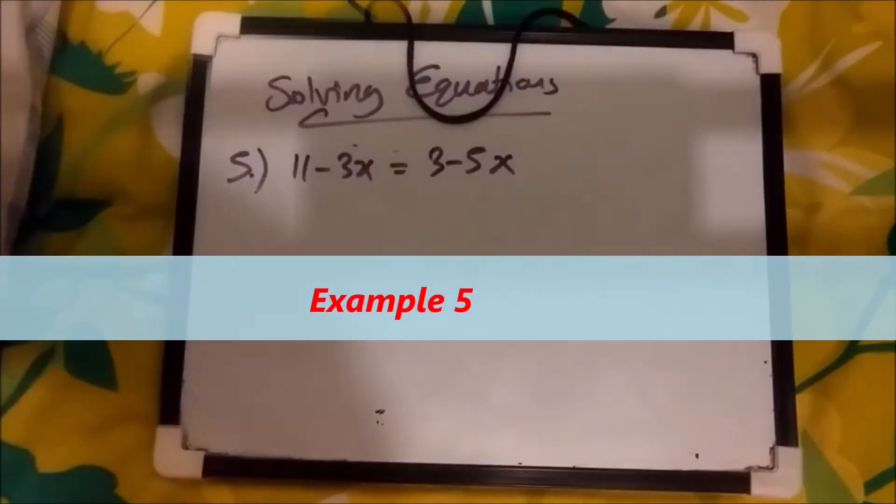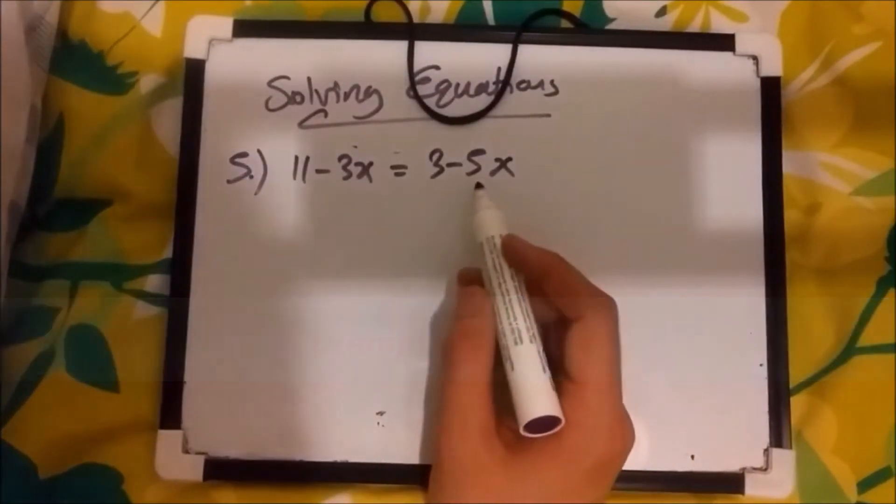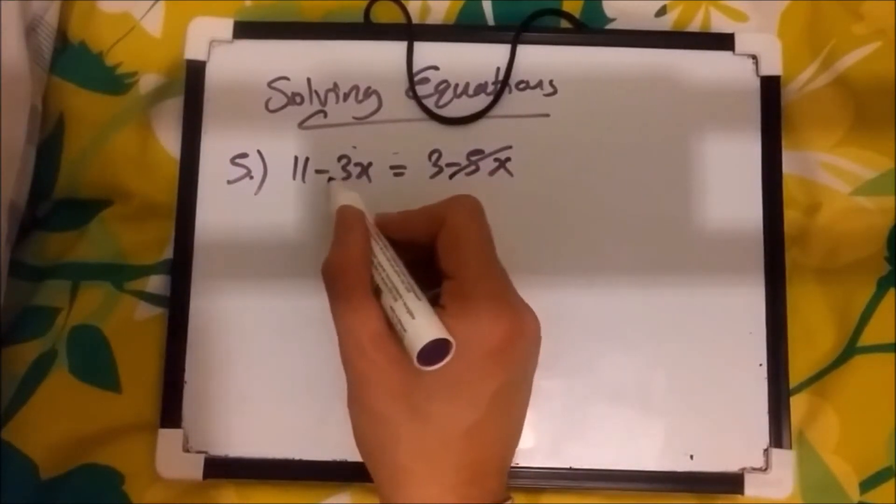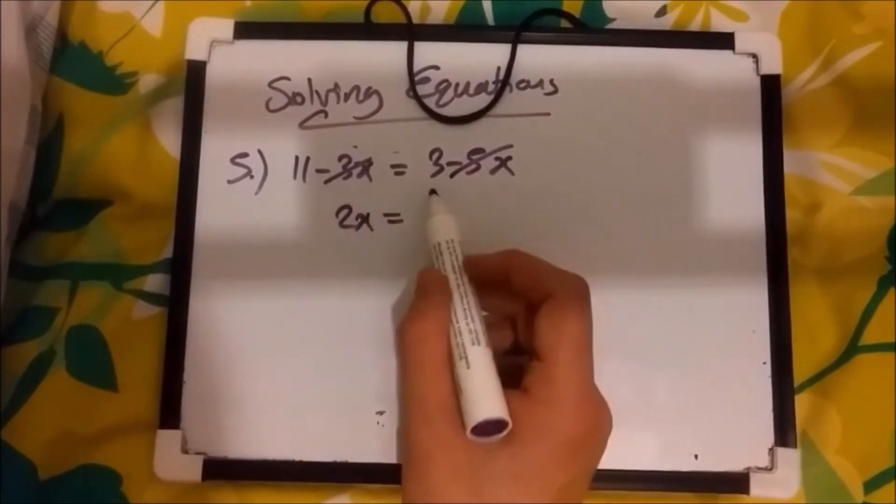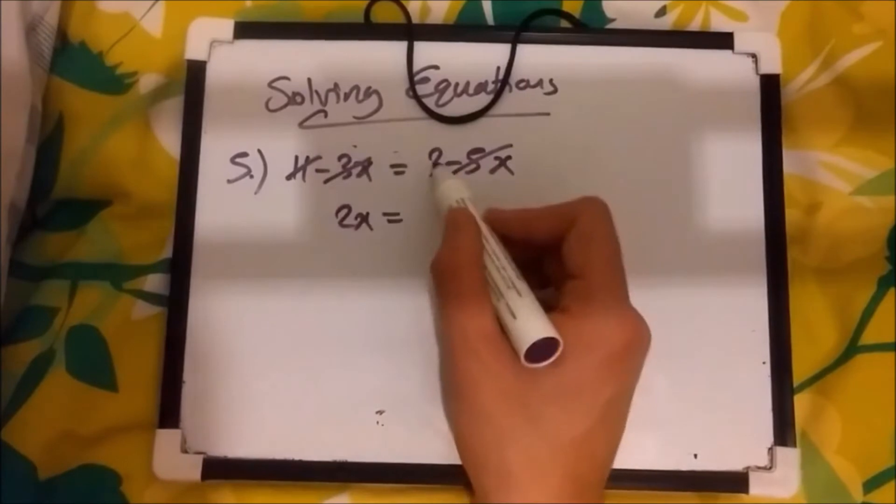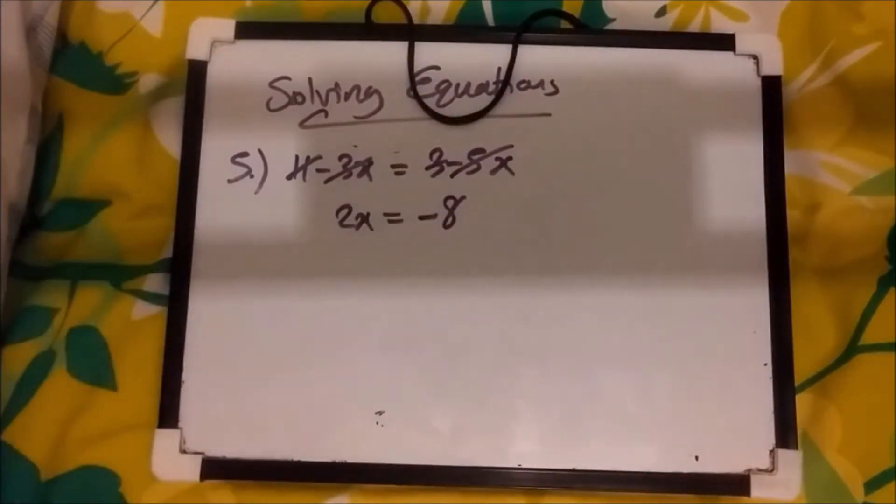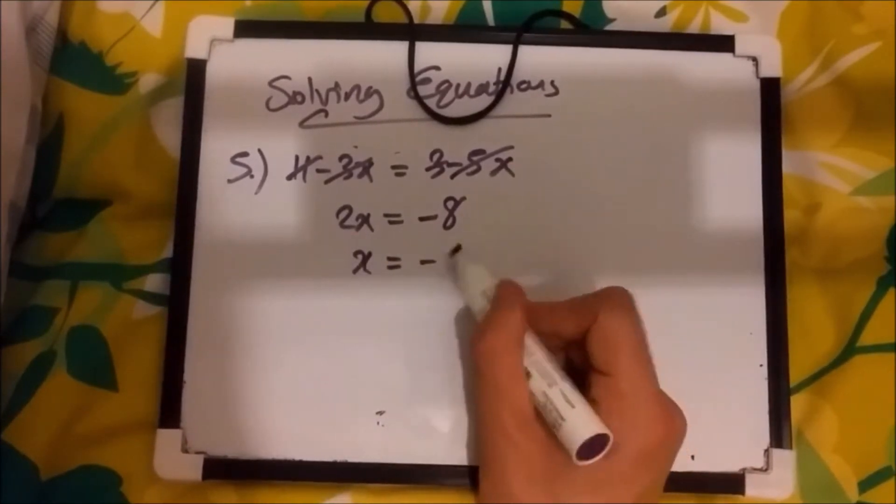Now, example 5. So let's do the same thing again here. What we're going to do, we're going to move the minus 5x across equal sign, so it's going to become a plus 5x. So minus 3x add 5x is just plus 2x. And again, if you move the 11 across, it becomes a minus 11. So 3 minus 11 is minus 8. And then dividing everything by 2, you're going to get x equals minus 4. So that was good.